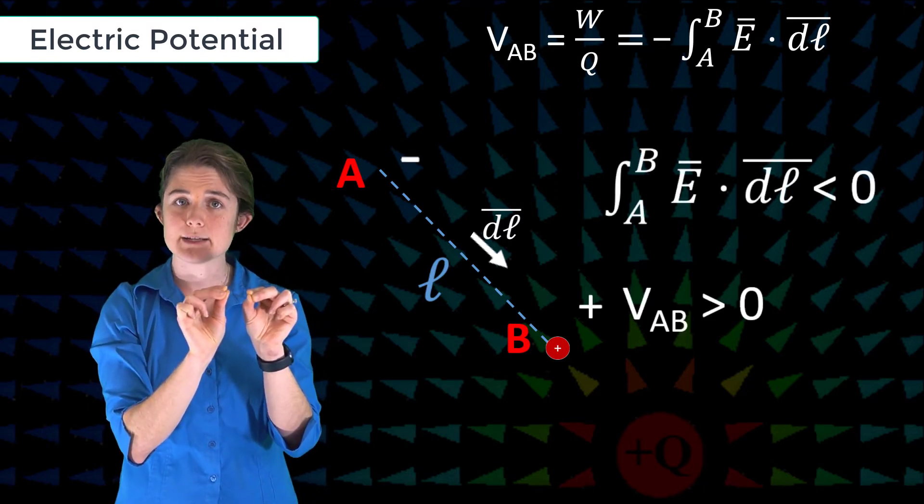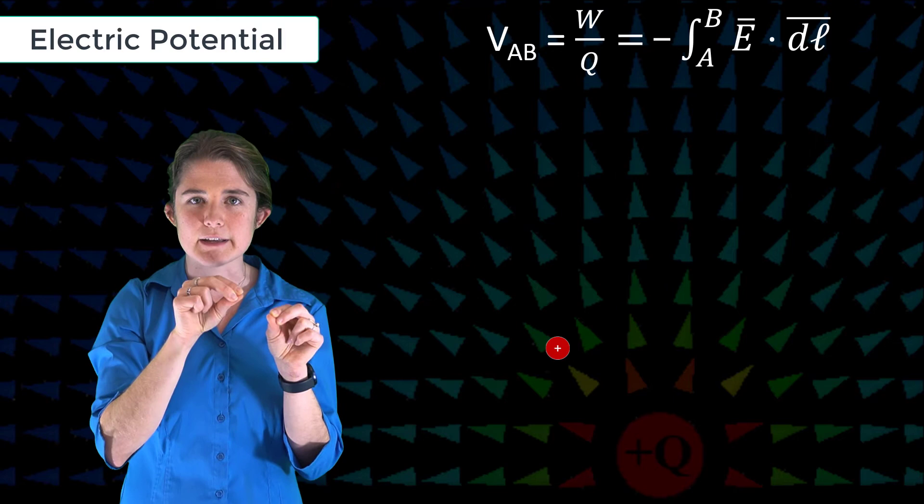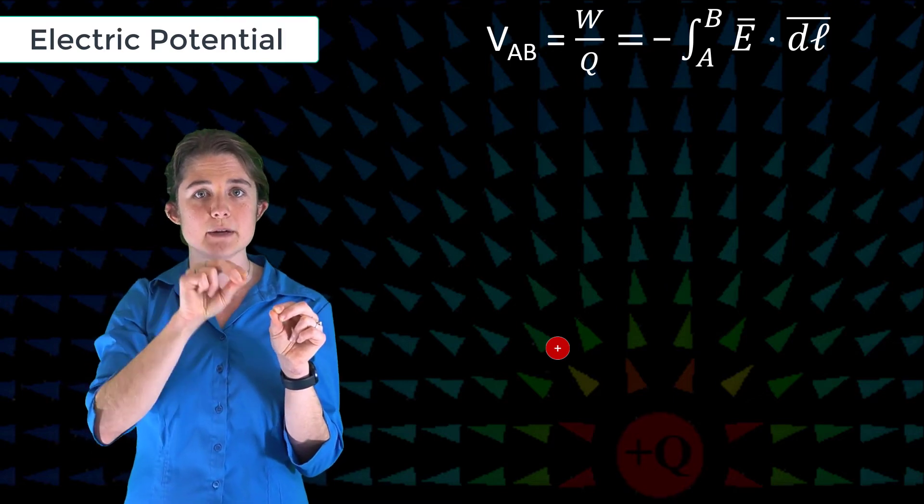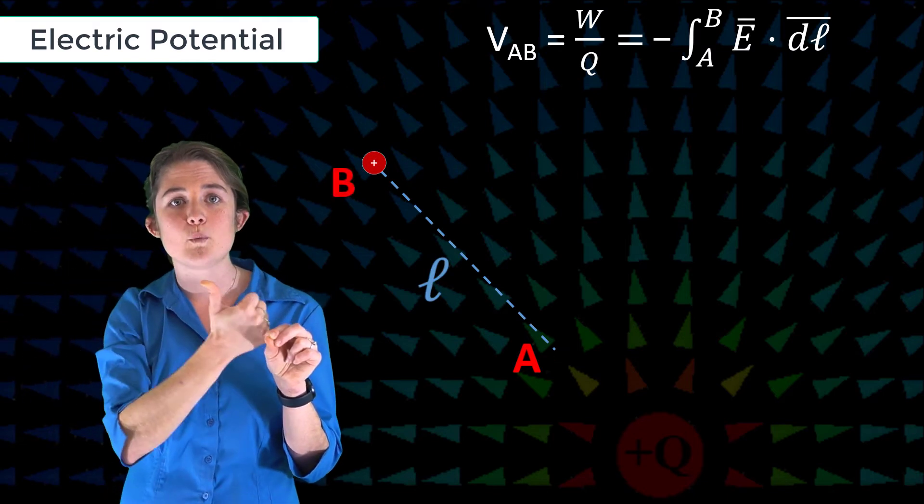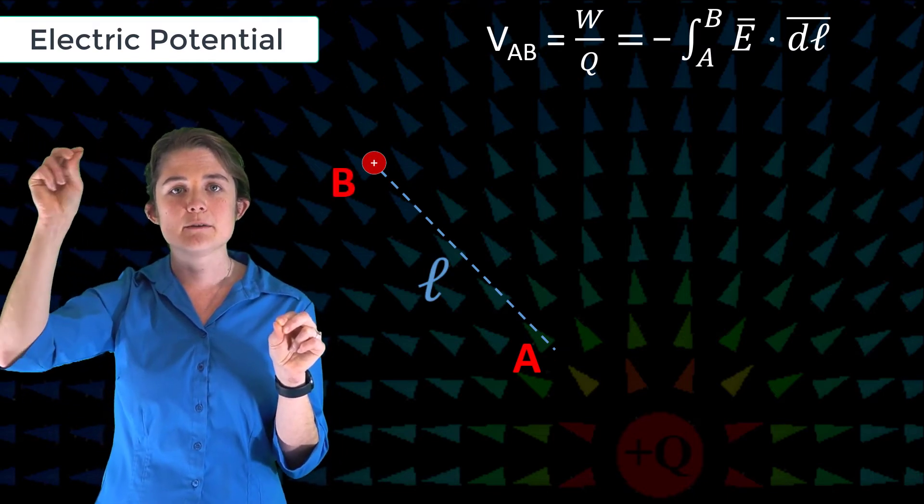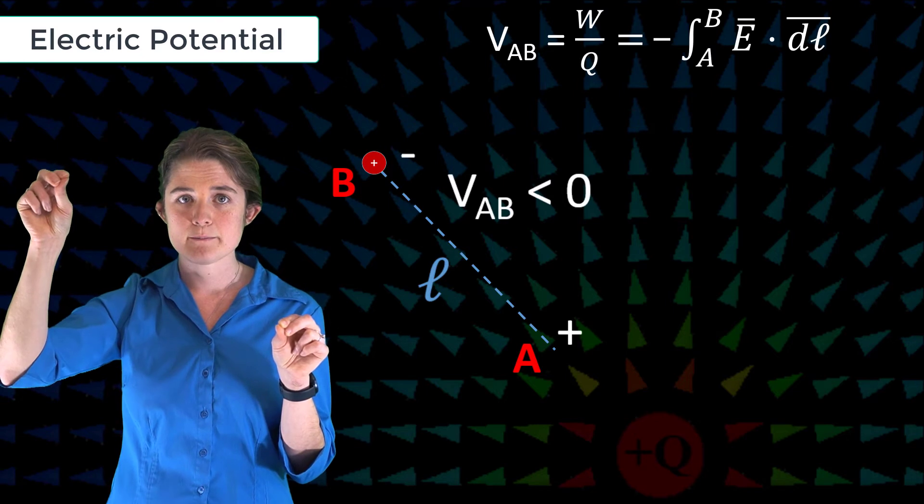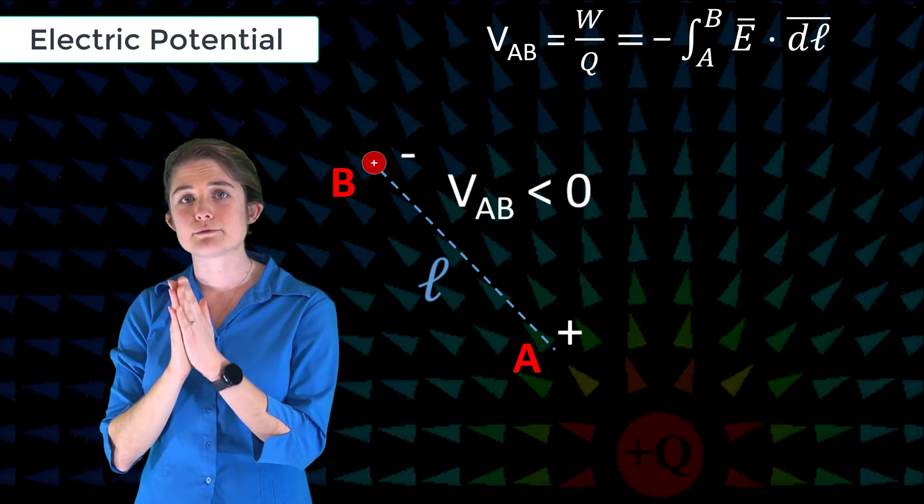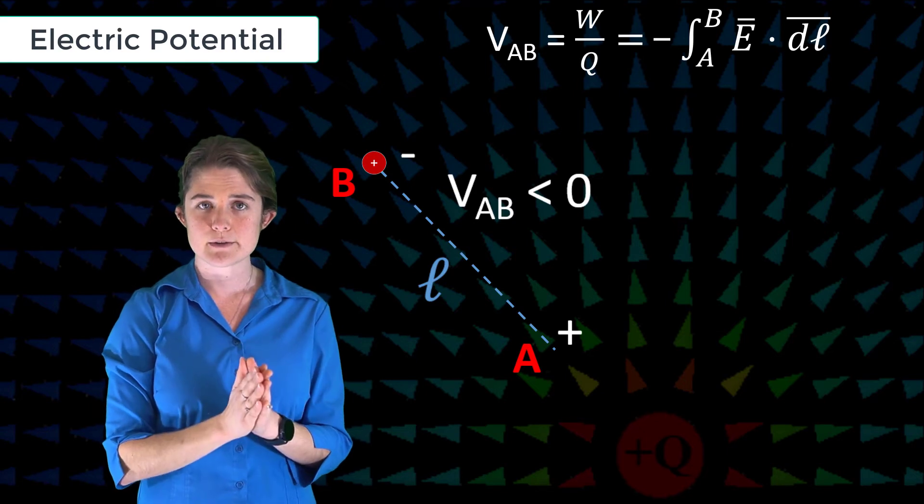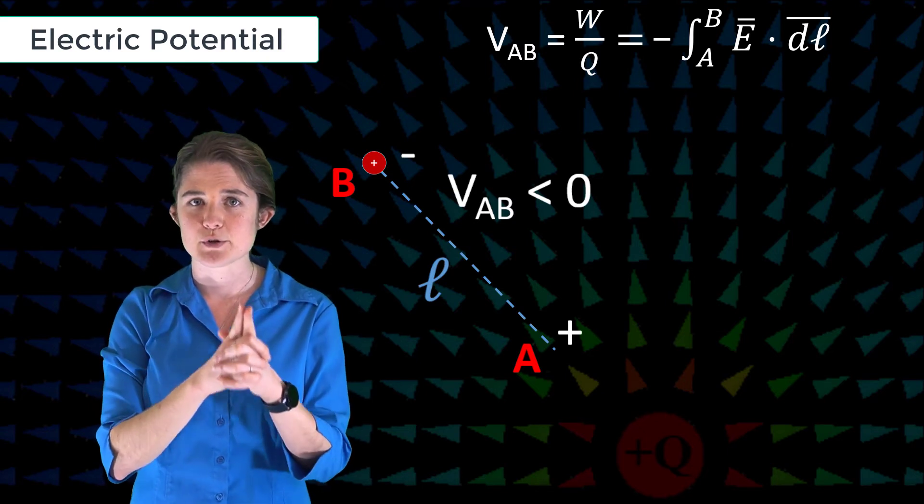Alternately, if you move your test charge from a near point A to a far point B, it will be moving with the electric field and the measured voltage will be negative. Electric field always points in the direction of most rapidly decreasing voltage. There's an equation for this which we'll come back to in a minute.